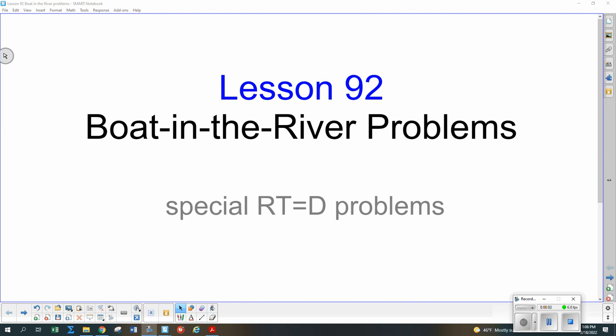In our lesson today, we're doing some special RT equals D problems. These are going to be problems where we have a boat traveling along or a plane flying overhead. The boat's in a river, so there's also a current. The plane has wind.